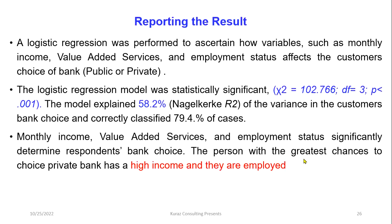The logistic regression model was statistically significant with a chi-square value of 102, degrees of freedom 3, p-value less than 0.01. The model explains 58.2% of the variance in customer choice of bank and correctly classified 79.4% of the cases. We can conclude that monthly income, value-added service, and employment status significantly determine the respondent's bank choice. A person with the greatest chance to choose a private bank has high income and is employed.